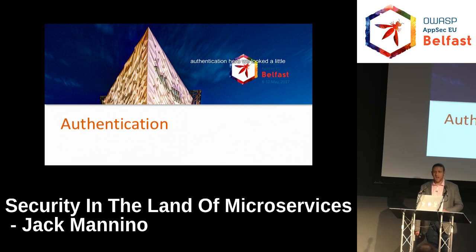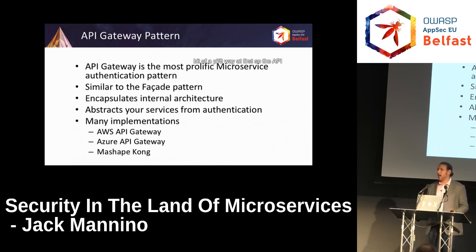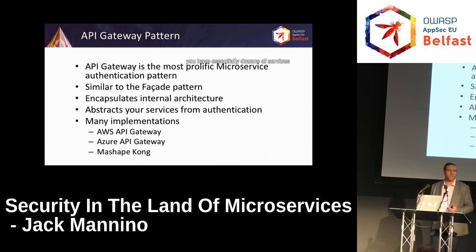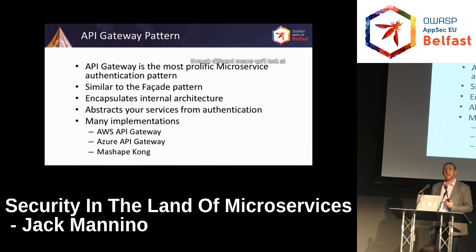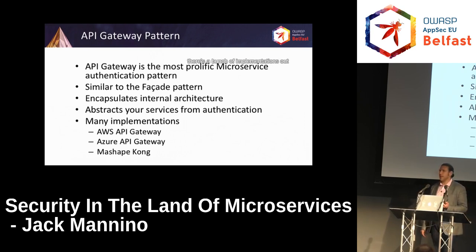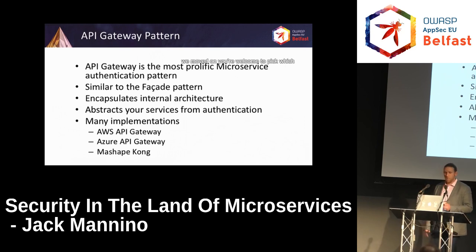Let's talk about authentication. The API gateway is generally the authentication pattern you're going to see here. It's essentially like the facade pattern — we have a single entry point that encapsulates that internal architecture from the externally visible perspective. The outside sees the gateway and routes; internally you have dozens of services behind the scenes. It allows you to do authentication in one place and pass that identity down to those microservices. There are a bunch of implementations out there — we use AWS's API gateway. We started with Kong but moved on.